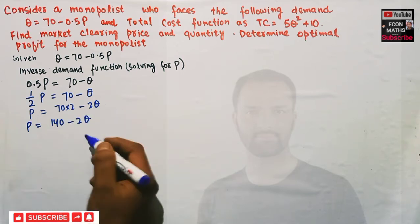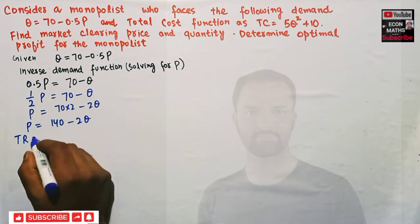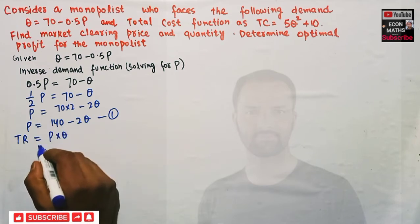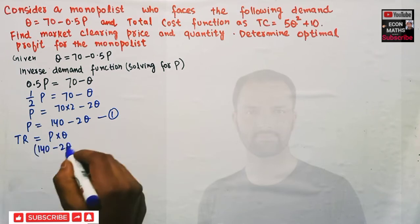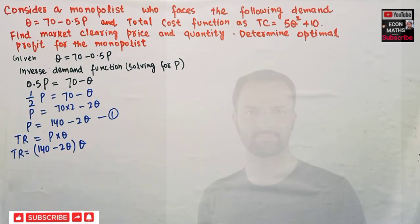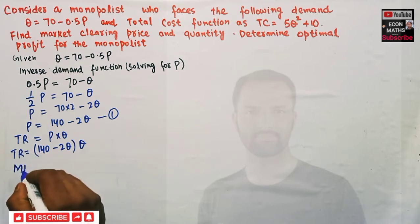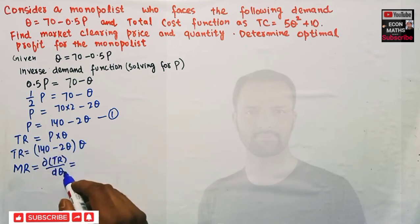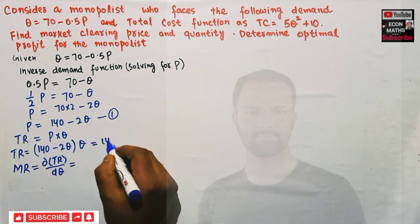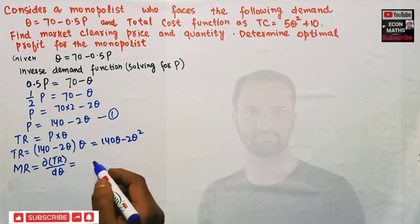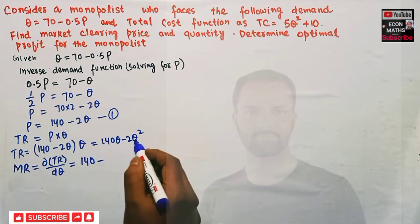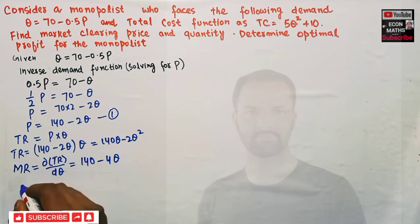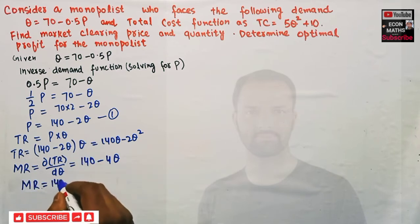Now we need to find total revenue. Total revenue is simply price times quantity. Substituting our inverse demand function, TR = (140 - 2Q) × Q = 140Q - 2Q². Marginal revenue is the derivative of total revenue with respect to quantity, so differentiating gives us MR = 140 - 4Q.